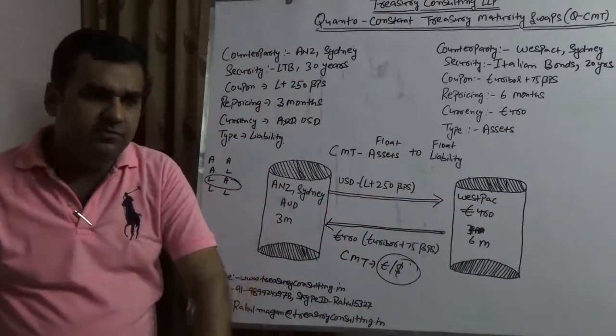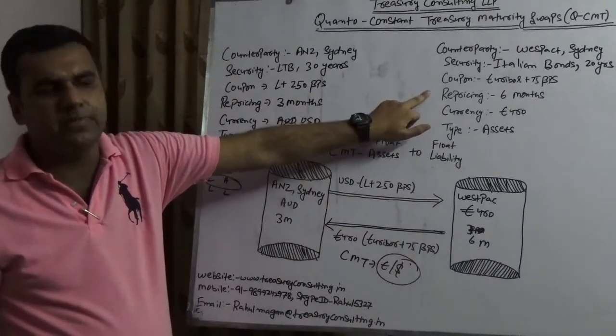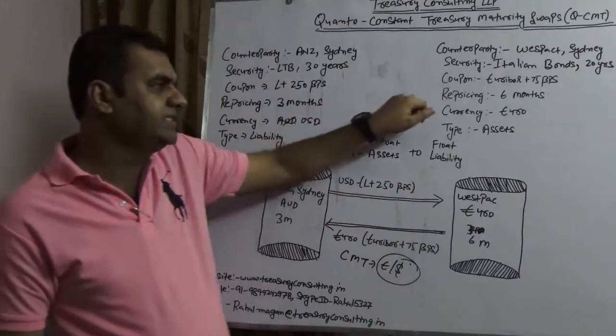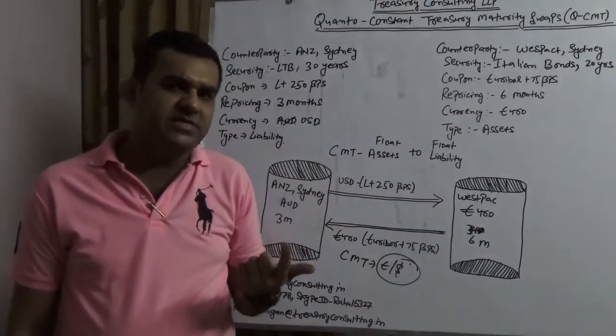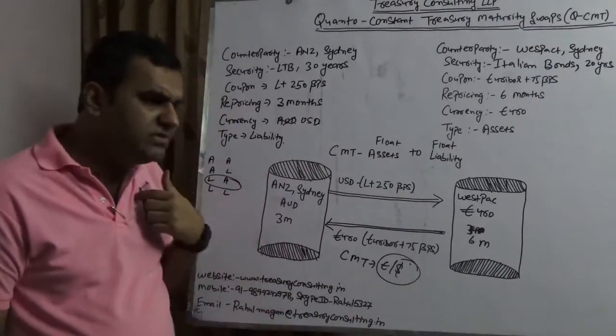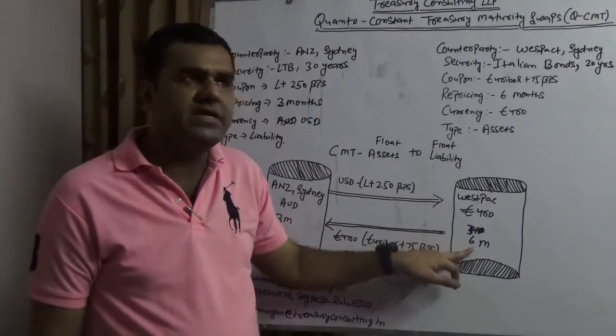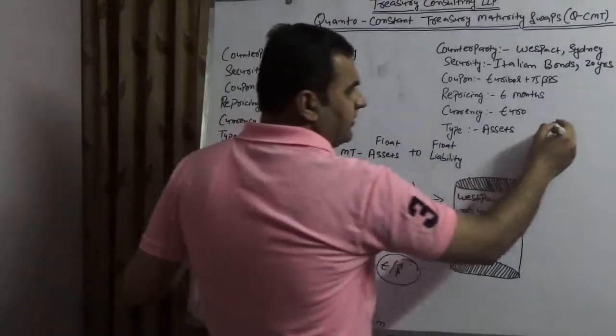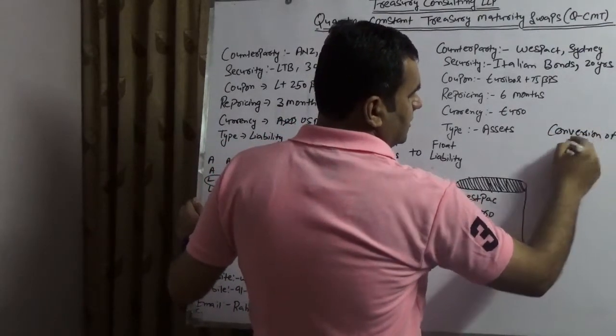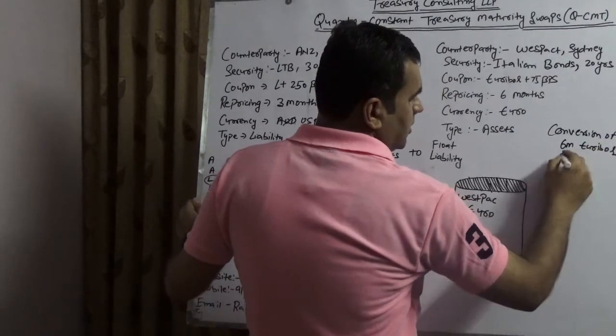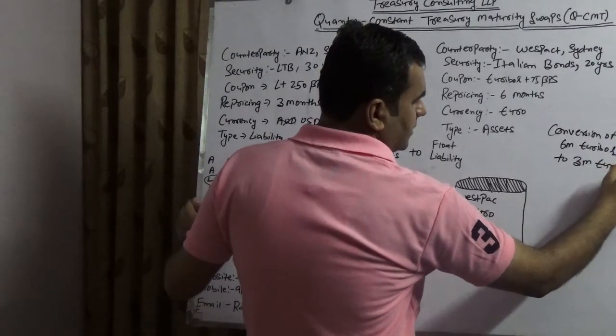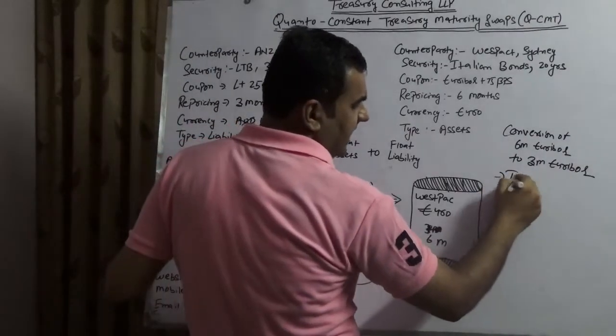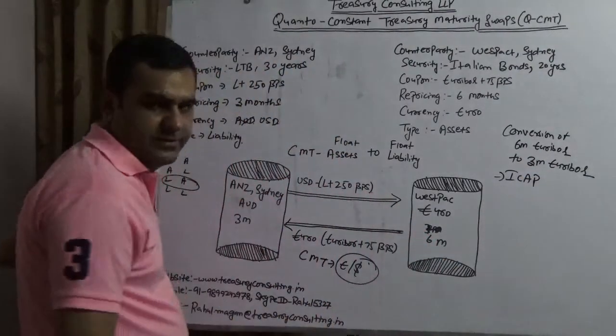But there is again a scene here in CMT - the repricing here is six months and here the repricing is three months. It means that the interest rate is determined three months here and six months here. If I am a trader in ANZ, I will definitely not do that kind of swap. I am saying I am getting repriced after three months, you are getting repriced after six months. Then I need to add something, which is known as conversion of six months Euribor to three months Euribor. And that is going to be done via the rate which is quoted by the largest liquidity provider of this globe, which is ICAP. And sometimes it is known as ICAP adjustment.